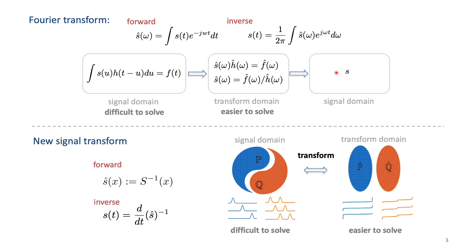The appeal of these transforms is to make certain problems easier to solve. Likewise, the transport transforms we'll describe have analytical formulas — here is an example of such a transform, which we'll discuss later. The whole idea is that signals which may be harder to classify in the original signal domain can become easier to classify in transform domain, where signal classes can become convex and a simple linear classifier can work well.